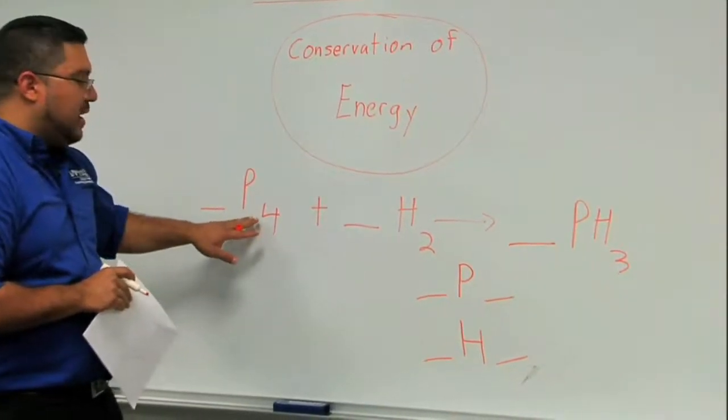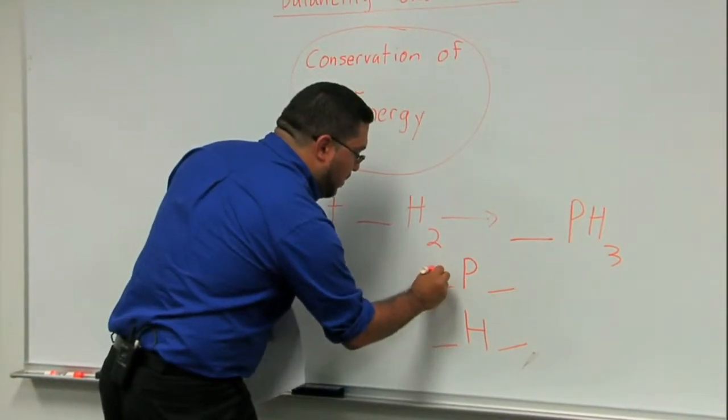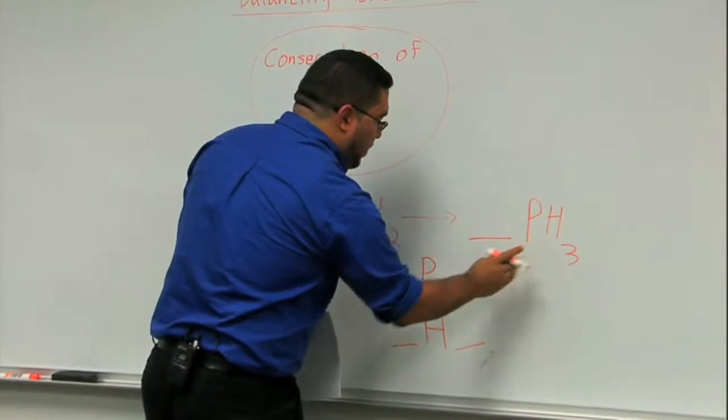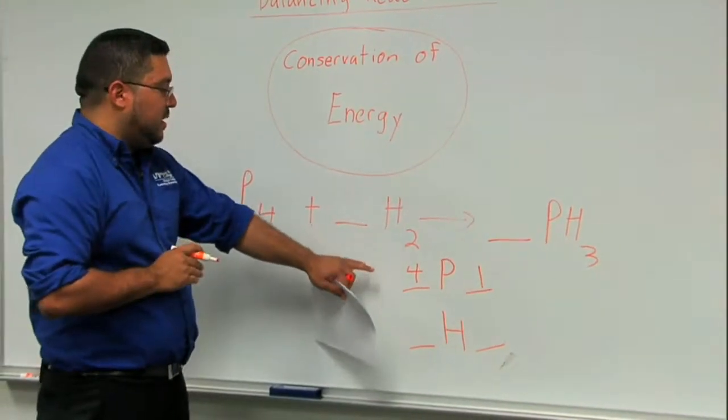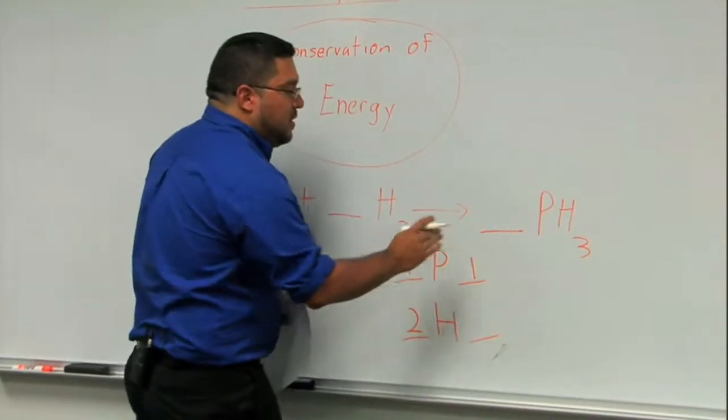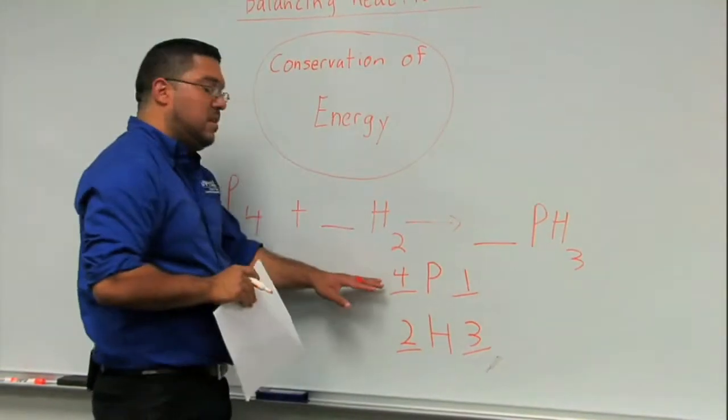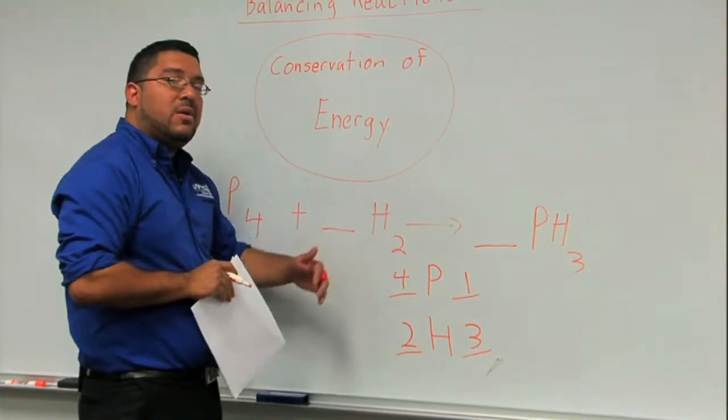For example, here I have four phosphorus, so I'll take note that initially I have four phosphorus. On the right side I only have one. How many hydrogens do I have on the left side? I have two hydrogens. And on the right side I have three hydrogens. So initially you want to take stock of everything you have in your initial reaction, and now is when you start adding what are known as coefficients.